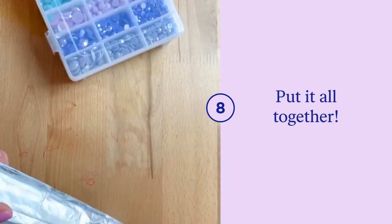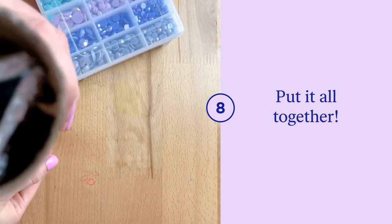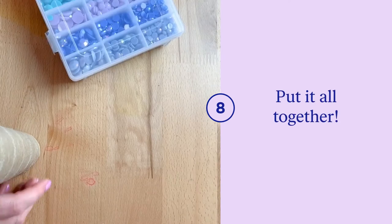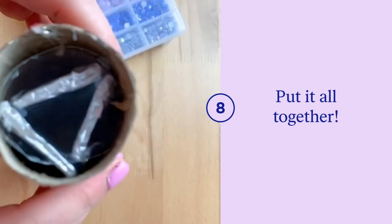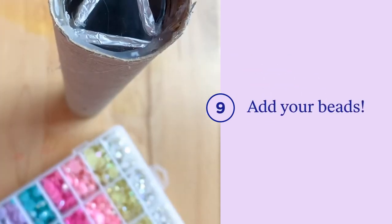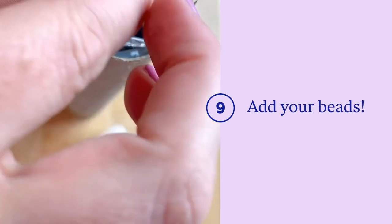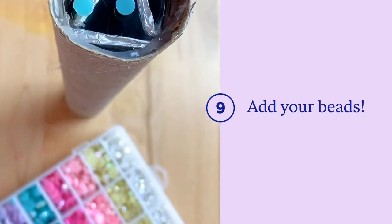Okay, it's time to start to assemble our kaleidoscope. Place your mirror triangle inside your tube and push it until the end of your triangle is completely inside. In this step, you're going to want to lay the smaller circle of plastic inside your tube so that it lays flat on your triangle.